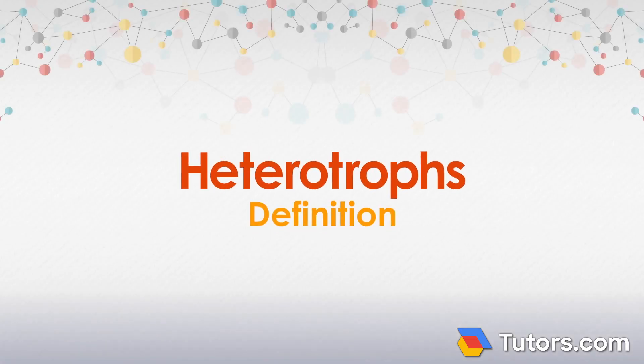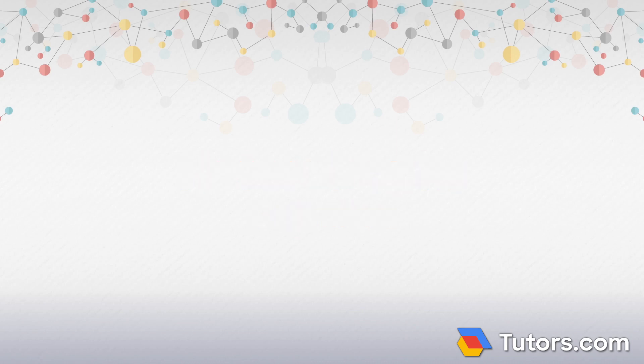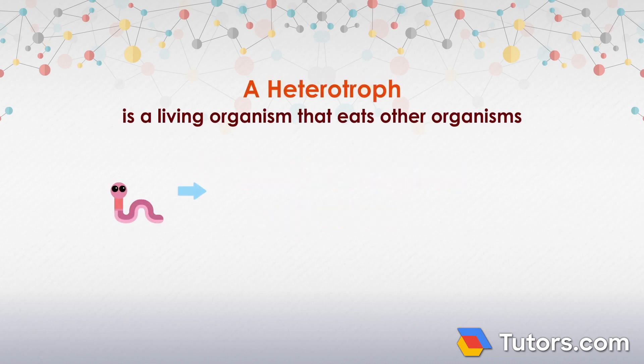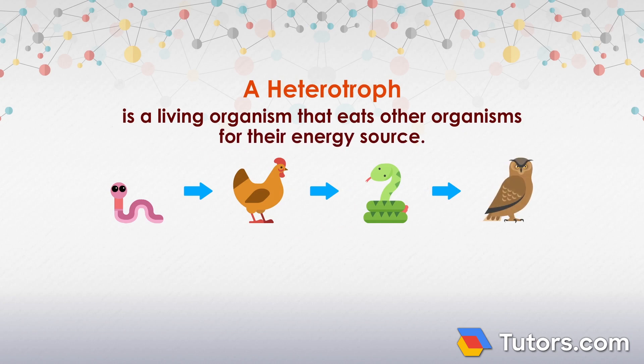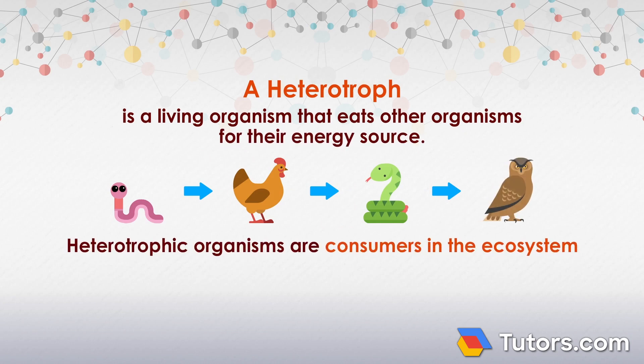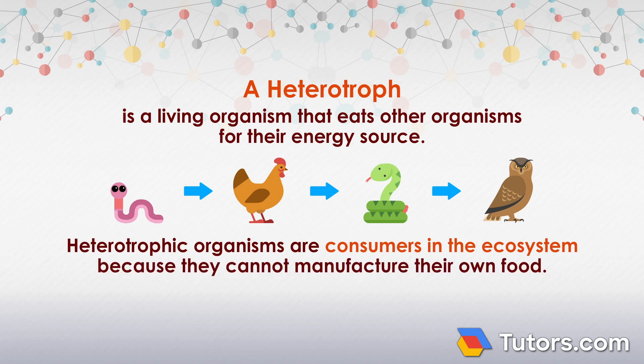A heterotroph is a living organism that eats other organisms for their energy source. Heterotrophic organisms are consumers in the ecosystem because they cannot manufacture their own food.